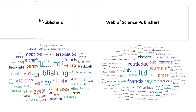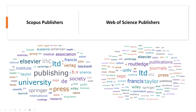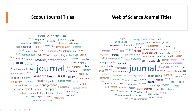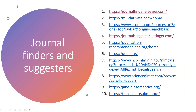In terms of publishers, Scopus is dominated by Elsevier and universities, along with Taylor & Francis, Cambridge, and Springer — the bolder the word in the visualization, the more frequently it appears in the database. For Web of Science, we have Taylor & Francis and Routledge, followed by companies, then Sage, Emerald, Wiley, Springer, Elsevier, Cambridge, and Oxford among others. As for journal titles, Scopus features international, review, history, economic, health, research, management, and European economics, whereas Web of Science features engineering, sciences, research, science, medicine, management, and chemistry — mostly engineering-focused.